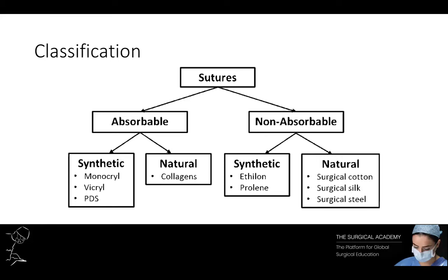The suture type chosen varies greatly depending on the clinical scenario. For example, if you were undertaking a mass closure of a midline laparotomy, you may wish to choose PDS as your suture. Vascular anastomosis will probably need prolene. A hand-sewn bowel anastomosis may need vicryl. And if you are securing a drain, you may decide to use a silk suture.